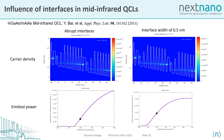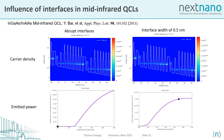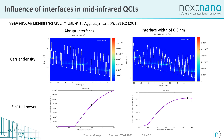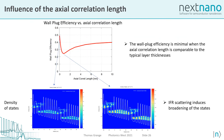Finally, we look at the influence of interface roughness in mid-infrared QCLs. We compare the case of abrupt interfaces with the case of an interface width of 0.5 nanometers. We show an animation of the carrier density and the emitted power as a function of the voltage across the QCL. If we look at the wall plug efficiency as a function of the axial correlation length, we see a minimum for an axial correlation length which is comparable to the typical layer thicknesses. Looking at the density of states, for very small axial correlation lengths, the effect of interface roughness scattering is minimum and we have quite narrow states, but where we have the maximum of interface roughness scattering, the states are maximally broadened.